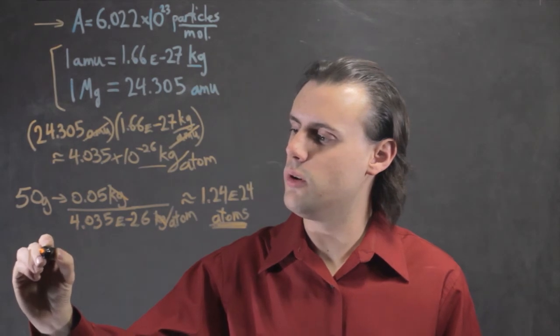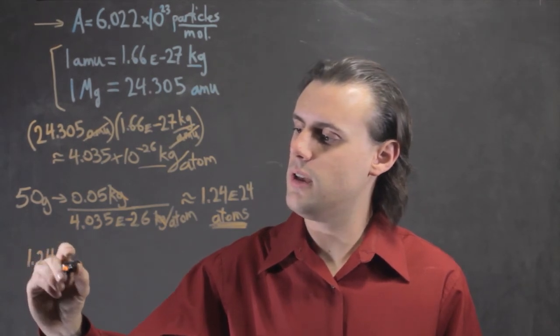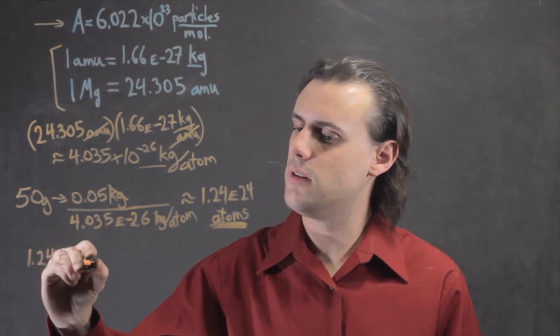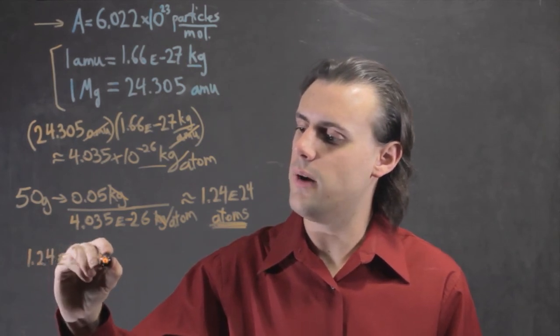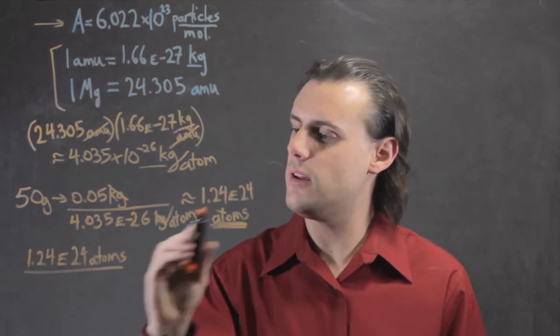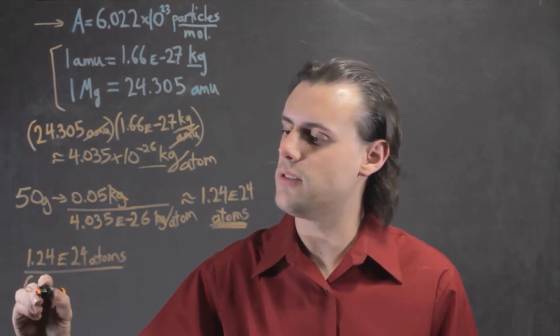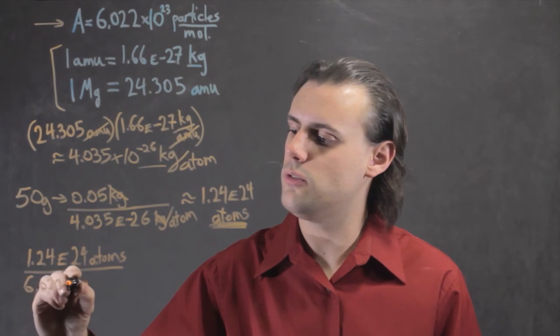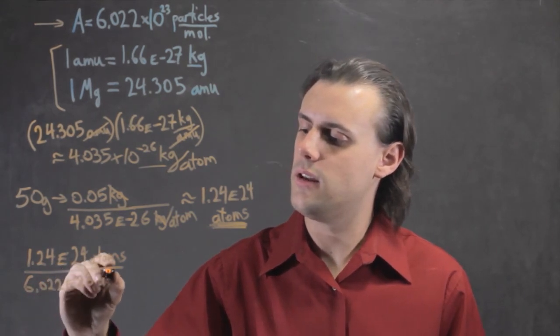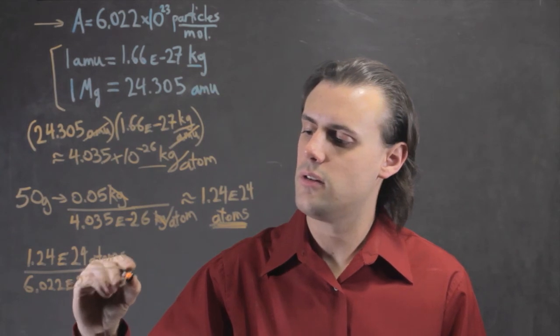So, we just take the total number of atoms in our 50-gram sample and divide by Avogadro's number. So we take this number and divide that by 6.022 times 10 to the 23 atoms per mole.